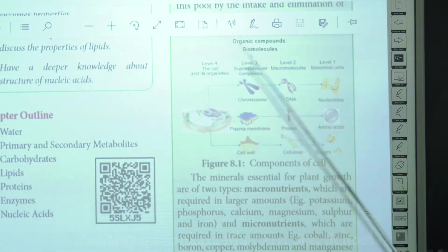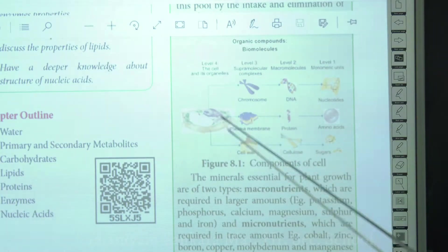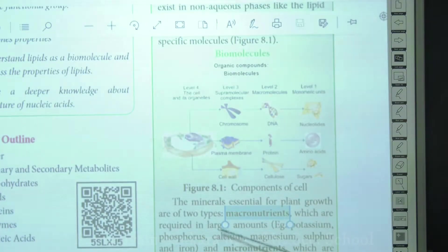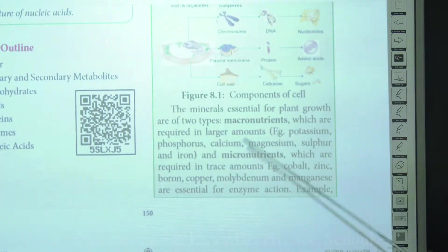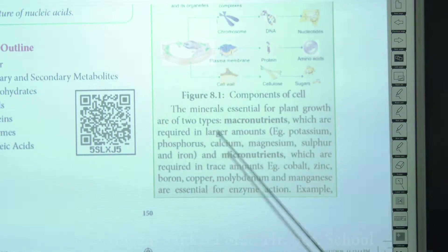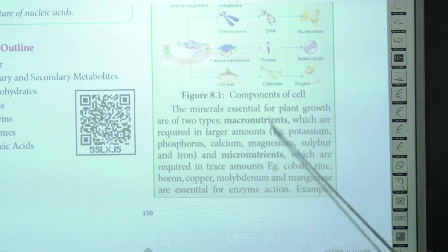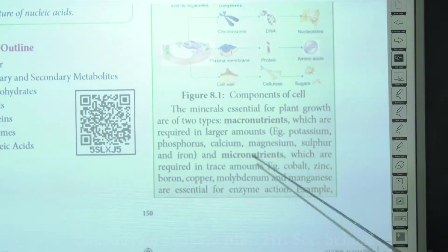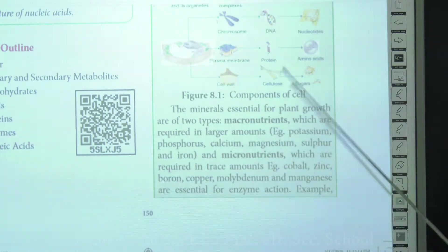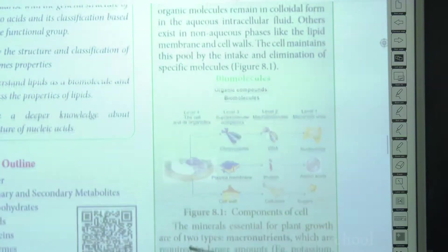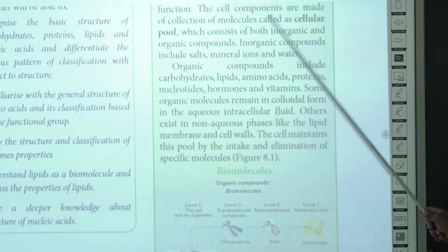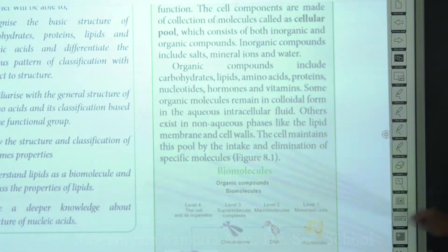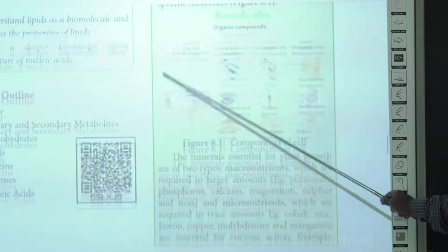In the cellular pool there are two types of nutrients: macronutrients and micronutrients. Macronutrients mainly include potassium, phosphorus, calcium, magnesium, sulfur, and iron. Micronutrients include cobalt, copper, and molybdenum. The organic components of the cellular pool constitute the biomolecules, which is what we are going to study in this chapter.